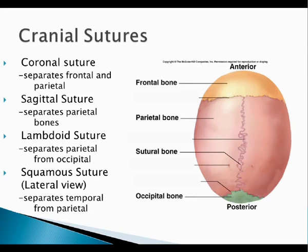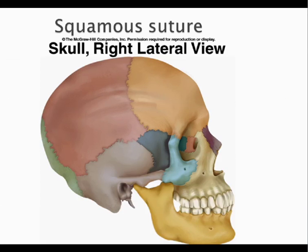On the side in a lateral view, the squamous suture separates the temporal from the parietal. The grayish-purple is the temporal, the pink is the parietal. It gets the name 'squamous' because of how it sits down — it actually squishes those bone cells so they're flattened and have a squished appearance.